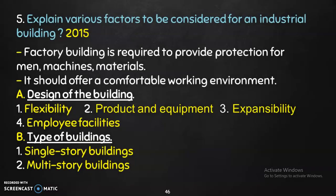How to explain the various factors to be considered for an industrial building. Physical facilities and industrial building factors: a factory building is required to provide protection for men, machines, and materials.